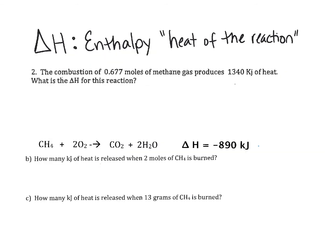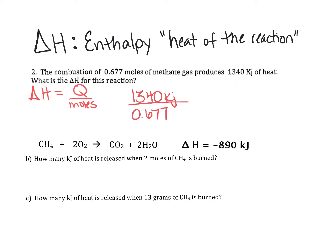Next we get into some calculations. If we want to calculate the enthalpy of a reaction, we take Q and divide it by the number of moles. So for this first problem, to find the delta H of the reaction, we would take 1340 and divide it by 0.677 moles.